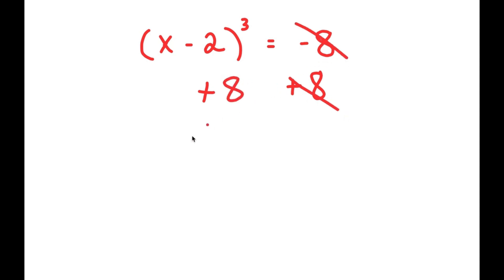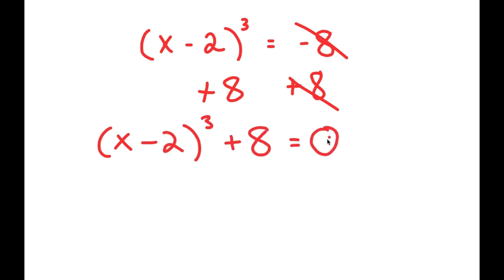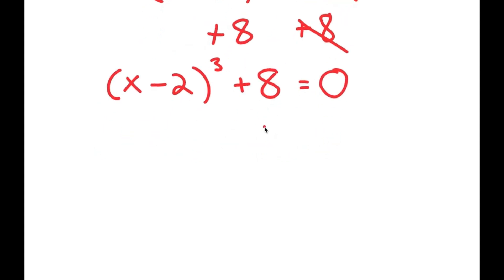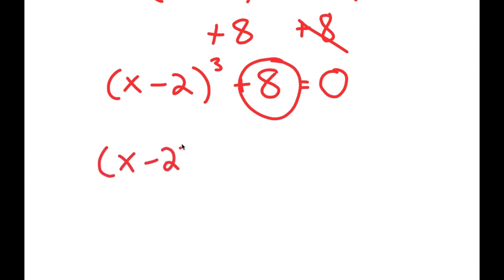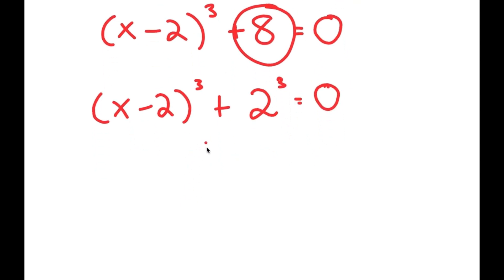These two cancel out, and I get x minus 2 to the power of 3 plus 8 is equal to 0. From here, I can rewrite 8 as 2 to the power of 3. So I have x minus 2 to the power of 3 plus 2 to the power of 3 equals 0.